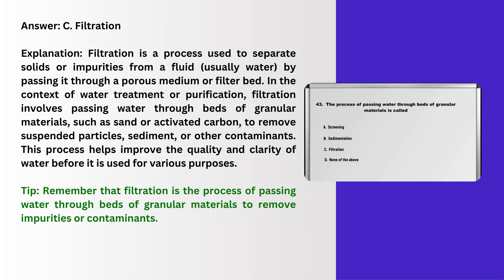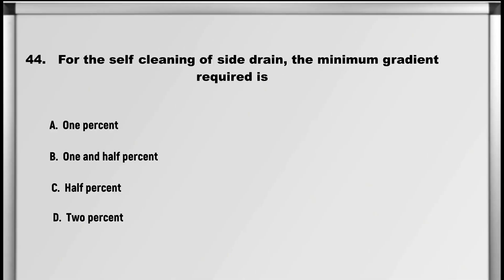Explanation: Filtration is a process used to separate solids or impurities from a fluid, usually water, by passing it through a porous medium or filter bed. In the context of water treatment or purification, filtration involves passing water through beds of granular materials, such as sand or activated carbon, to remove suspended particles, sediment, or other contaminants. This process helps improve the quality and clarity of water before it is used for various purposes. Tip: filtration is the process of passing water through beds of granular materials to remove impurities or contaminants.